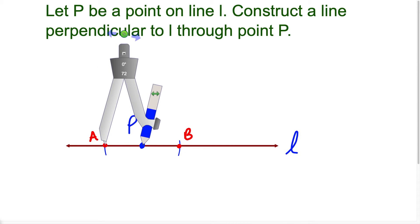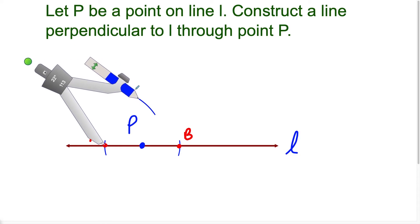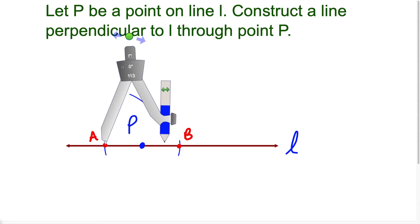So what we need to do next is we need to extend this compass so it goes more than halfway from A to B. And now we're just going to swing an arc and I'll extend it a little bit more so the point is a little bit further away from P. So we swing an arc above like this and we're going to repeat this process.